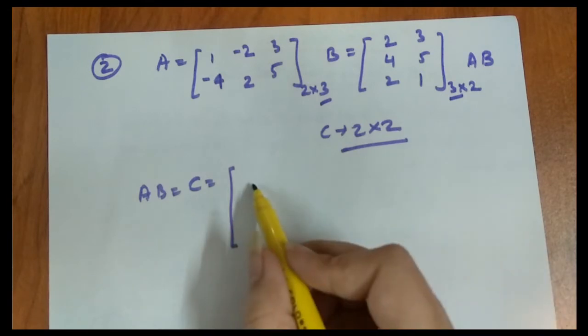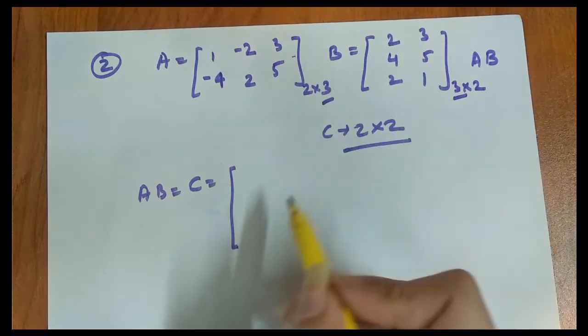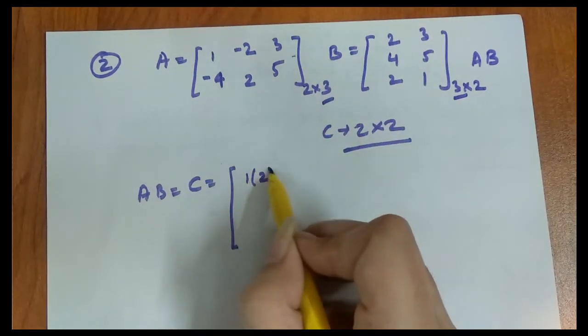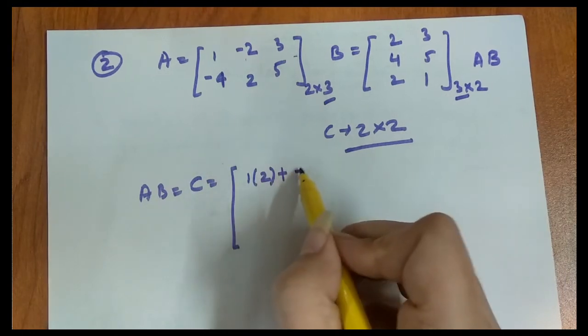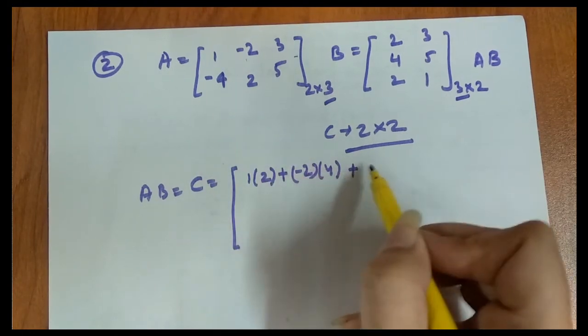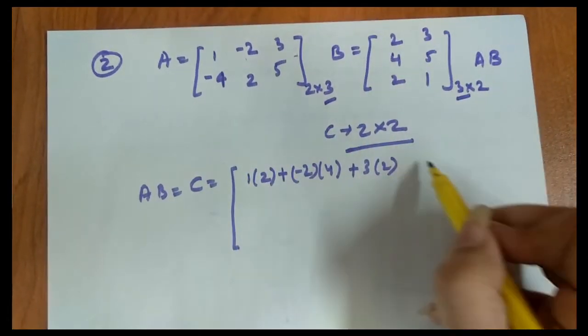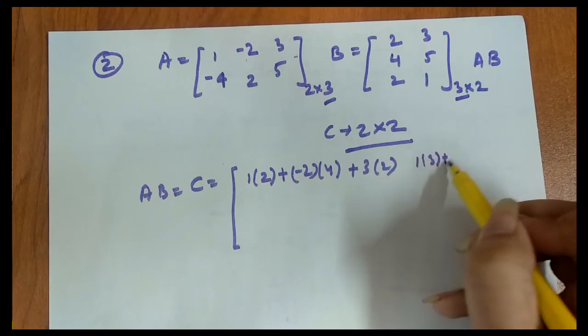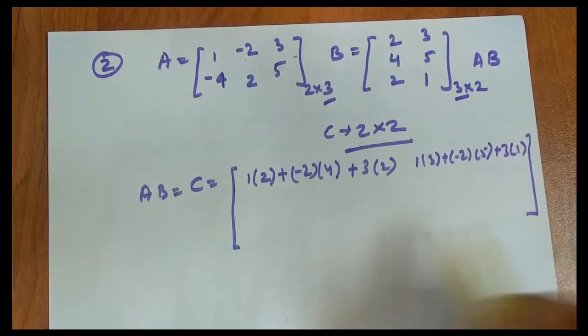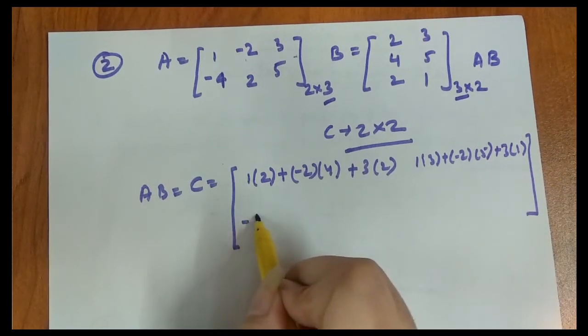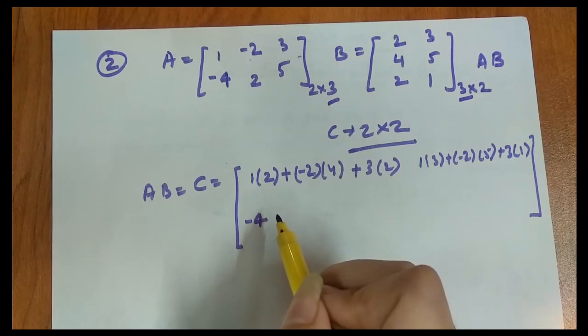So first element: first row first column. 1 times 2 plus -2 times 4 plus 3 times 2. First row second column: 1 times 3 plus -2 times 5 plus 3 times 1. Second row first column of first matrix, second row second matrix first column: -4 times 2 plus 2 times 4 plus 5 times 2.